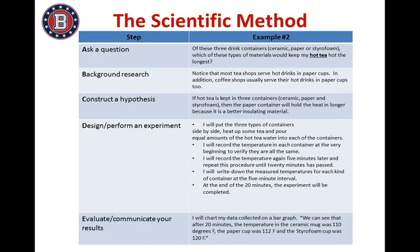Here's another example, a little bit more difficult. The question is: of these three drink containers — ceramic, paper, or styrofoam — which type of material would keep my hot tea hot the longest? After asking that question, I would do some background research. Most tea shops and coffee shops serve hot drinks in paper cups, perhaps with a sleeve. So my hypothesis is: if hot tea is kept in three containers — ceramic, paper, and styrofoam — then the paper container will hold the heat in longer because it is a better insulating material.